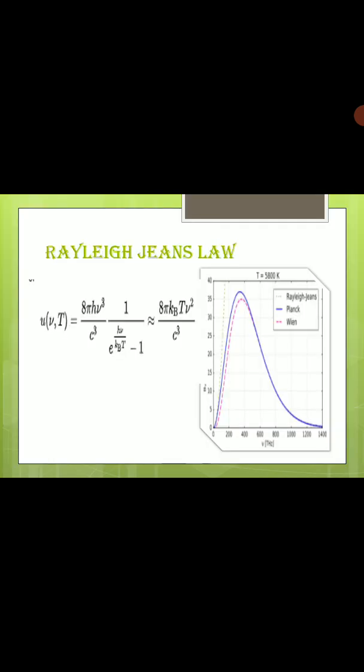Rayleigh-Jeans law: This is the expression for this law. U V T equals 8 pi h nu cubed C cubed 1 over E to the power h nu by k T minus 1, approximately equals 8 pi k B T nu squared by C cubed. There are many forms of this law. Using this law we can plot this graph, and this law is applicable for longer wavelengths.